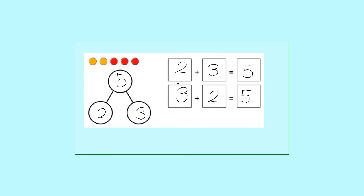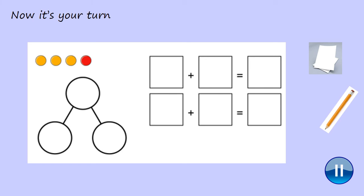Now it's your turn to have a go. You will need to pause the video while you get out a piece of paper and a pencil from your home learning pack. Count the counters and complete the whole part model — draw the whole part model, then count how many counters there are altogether, the whole, and then how many in the two parts: how many yellow and how many red. Then you can use this information to complete the two number sentences. Pause the video now while you do them.